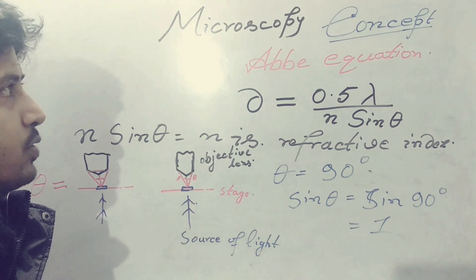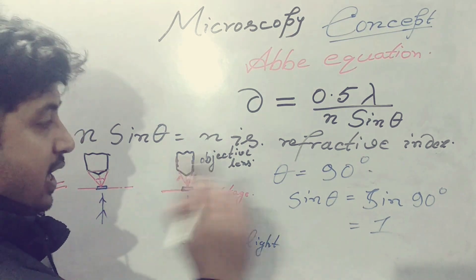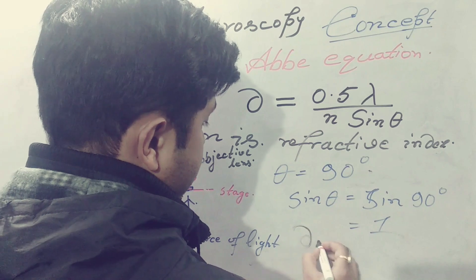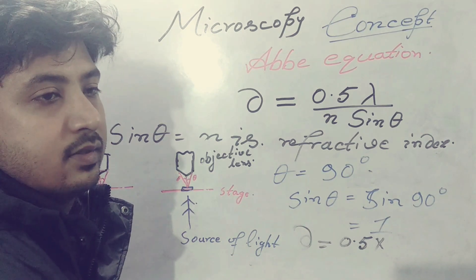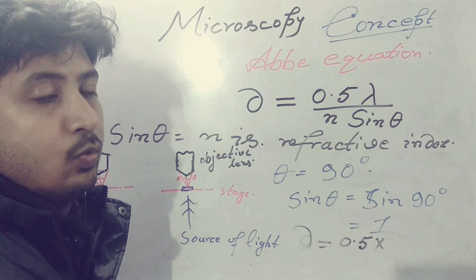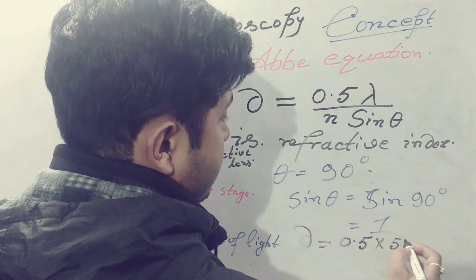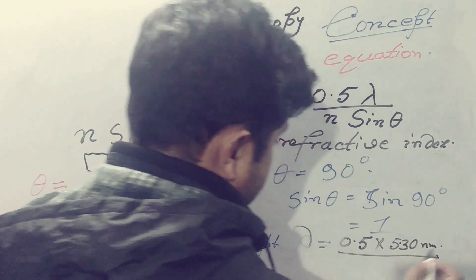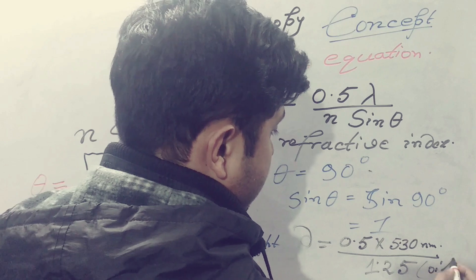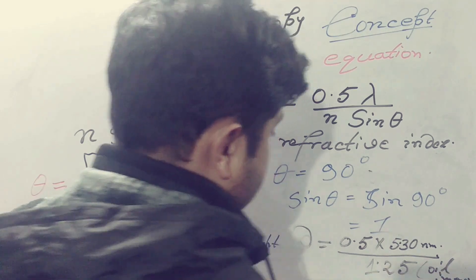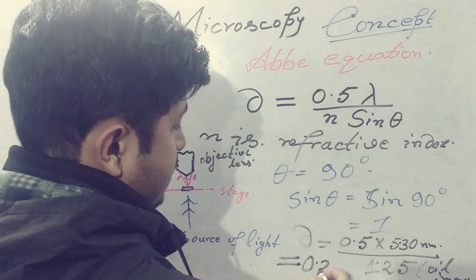This is the basis of the microscopy concept, where you can get maximum resolution from the basic equation in a bright field microscope. That is: d = 0.5 multiplied by the wavelength of the visible spectrum — using blue-green light which has a much shorter wavelength of 530 nm — and 1.25 if you are using oil immersion. The maximum resolution you can get is 0.2 micrometers.